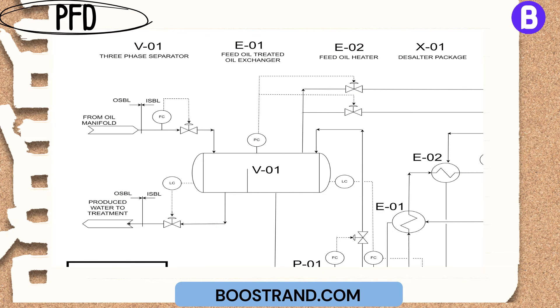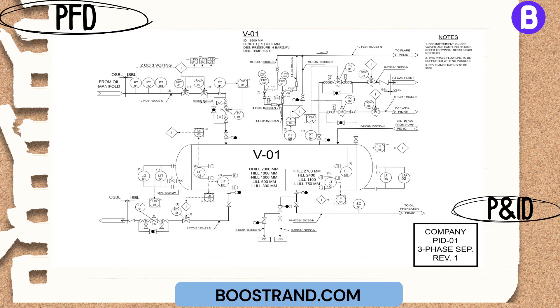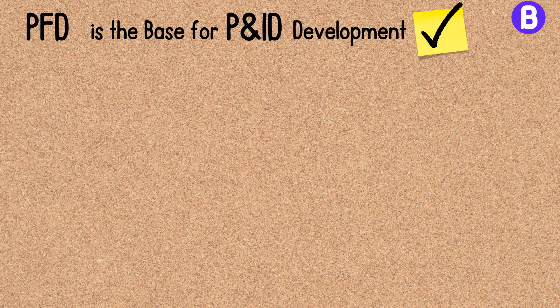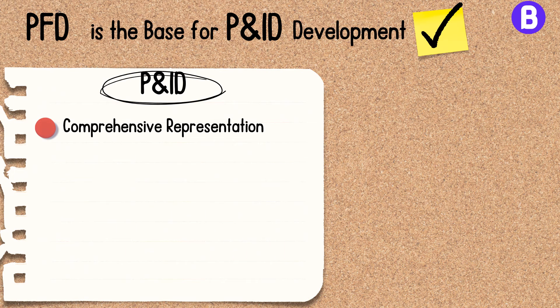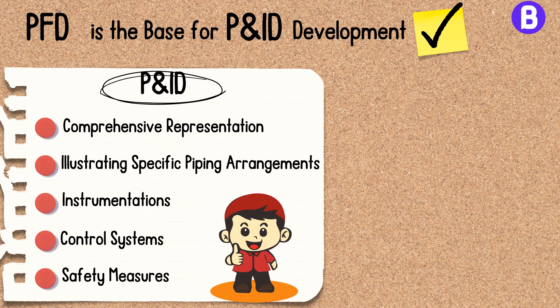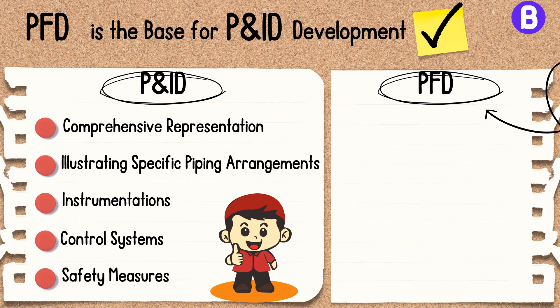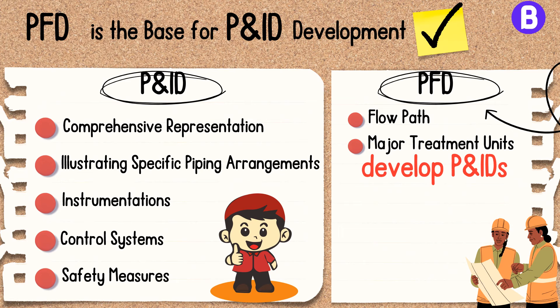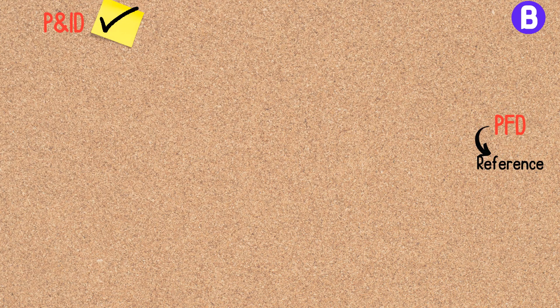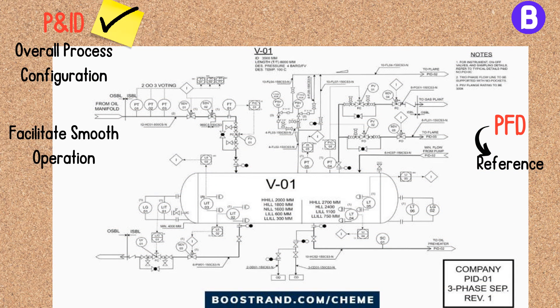Based on this PFD, engineers can develop P&ID. The process flow diagram serves as the foundation for creating detailed piping and instrumentation diagrams (P&ID), providing a more comprehensive representation of the process, illustrating specific piping arrangements, instrumentation, control systems, and safety measures. For example, a PFD for a wastewater treatment plant would show the general flow path and major treatment units, and from it, engineers develop P&ID outlining precise piping connections, instrumentation locations, and control loops, ensuring the P&ID accurately reflects the overall process configuration.